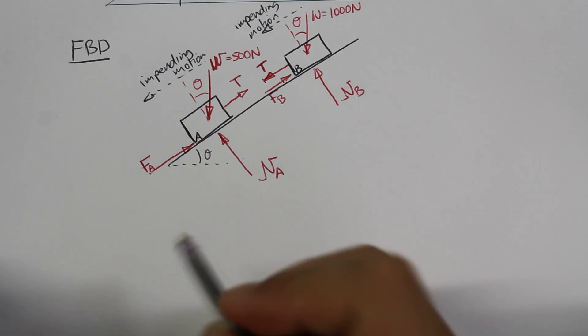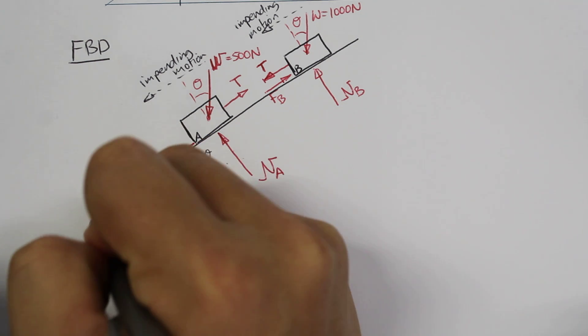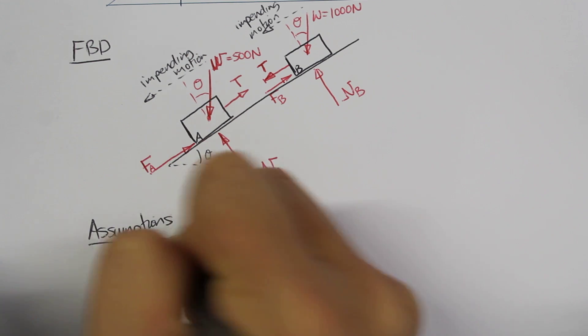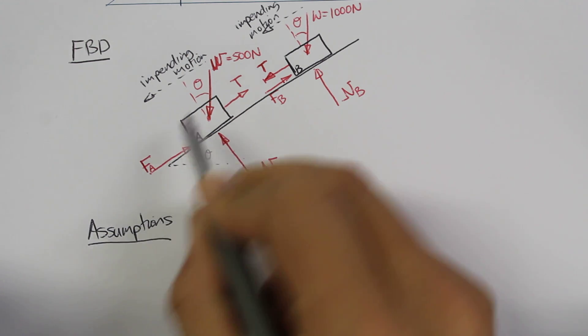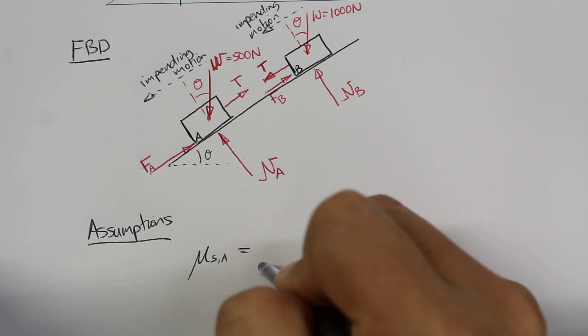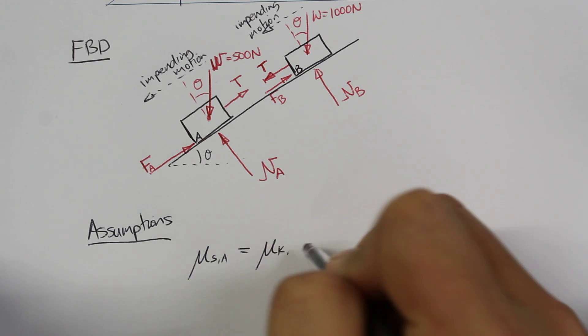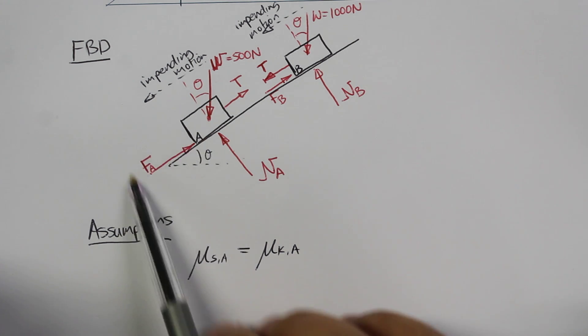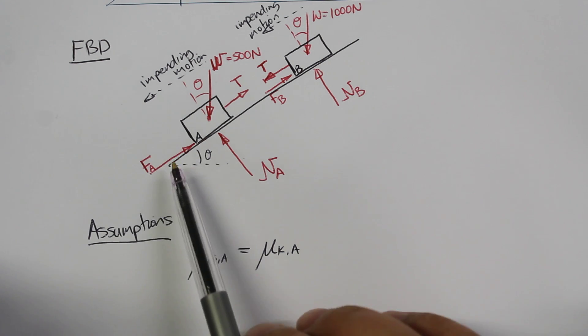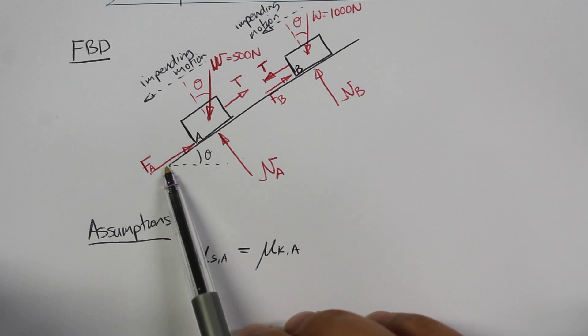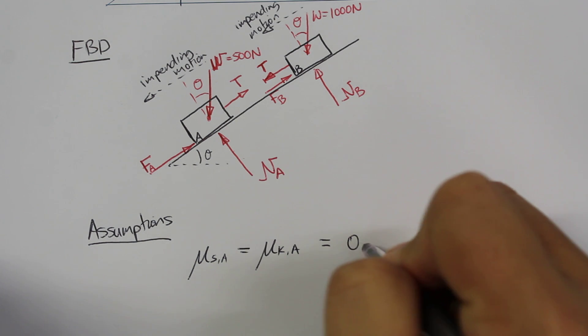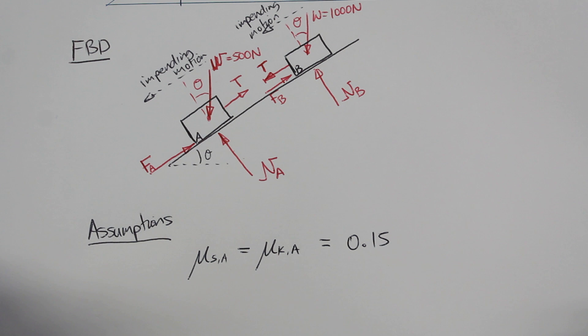The first assumption is that the static friction coefficient, mu s for block A, is the same as the kinetic friction coefficient for block A. We'll assume that the static friction from block A is the same as the kinetic friction for block A. So this is equal to 0.15, that was from the question.